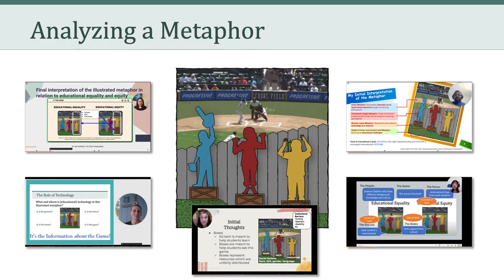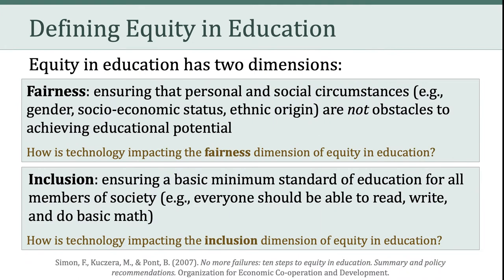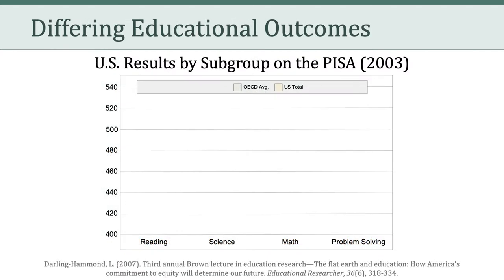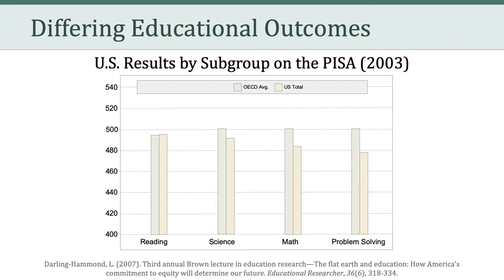Now let's hear a little bit more about educational equity. Last week, we left off talking about the two dimensions of equity in education, fairness and inclusion, and we contemplated how technology is impacting both of those dimensions. I want you to keep that in mind as we move forward to talk about some of the points raised in the Darling-Hammond 2007 article. Darling-Hammond shares with us the U.S. results by subgroup on the 2003 Program for International Student Assessment, also known as the PISA. Let's take a look at how the U.S. does, on average, compared with the other 35 countries included in the PISA assessment, labeled as the OECD. The U.S. is pretty close to average in reading, a little bit lower in science, a little bit lower in math, and considerably lower in problem solving.